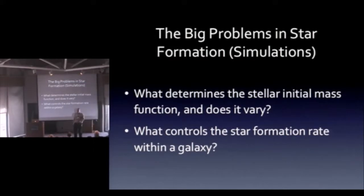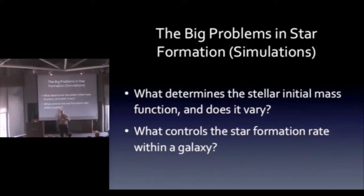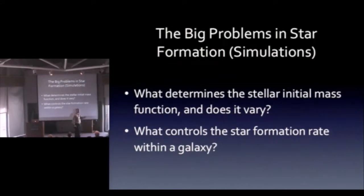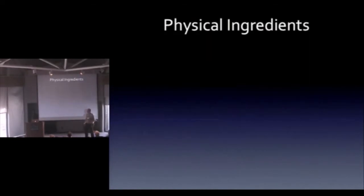I want to ask this on a more micro-physical scale than Dushan and Phil. They're interested in over cosmological timescales what fraction of the baryons get turned into stars. I want to ask a more instantaneous question: if I handed you a galaxy and gave you the distribution of gas and stars within it, could you give me back the instantaneous star formation rate?